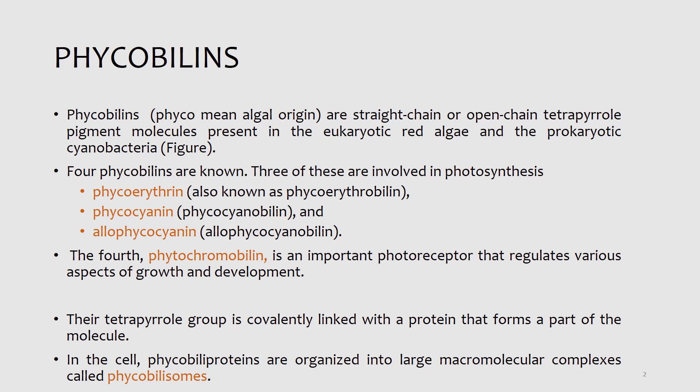The fourth phycobiliin, the phytochromobilin, is an important photoreceptor that regulates various aspects of growth and development. The three photosynthetic phycobiliins are phycoerythrin, also known as phycoerythrobilin; phycocyanin, also known as phycocyanobilin; and allophycocyanin, also known as allophycocyanobilin. In addition to the open chain tetrapyrrole, the phycobiliin pigments differ from chlorophyll in that the tetrapyrrole group is covalently linked with a protein that forms a part of the molecule.